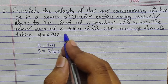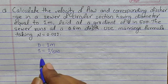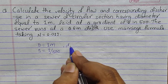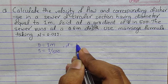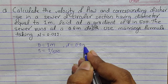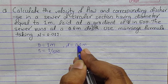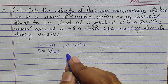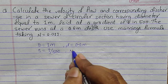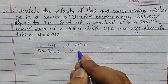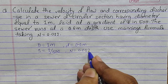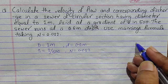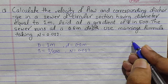The sewer runs at 0.6 meter depth, meaning small d equals to 0.6 meter — the sewer is running partially full. We use Manning's formula and we are given n equals to 0.012. Let's draw a rough sketch of the circular sewer.